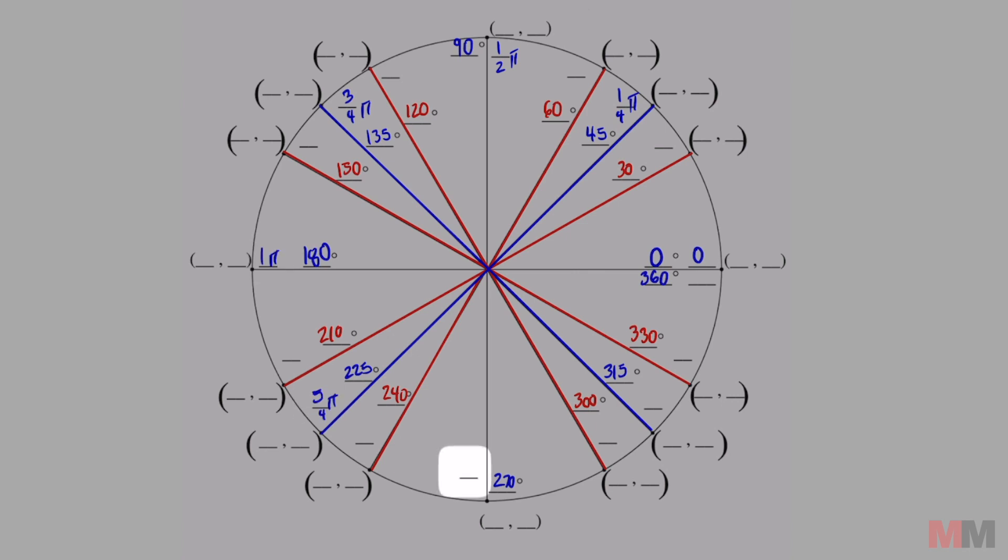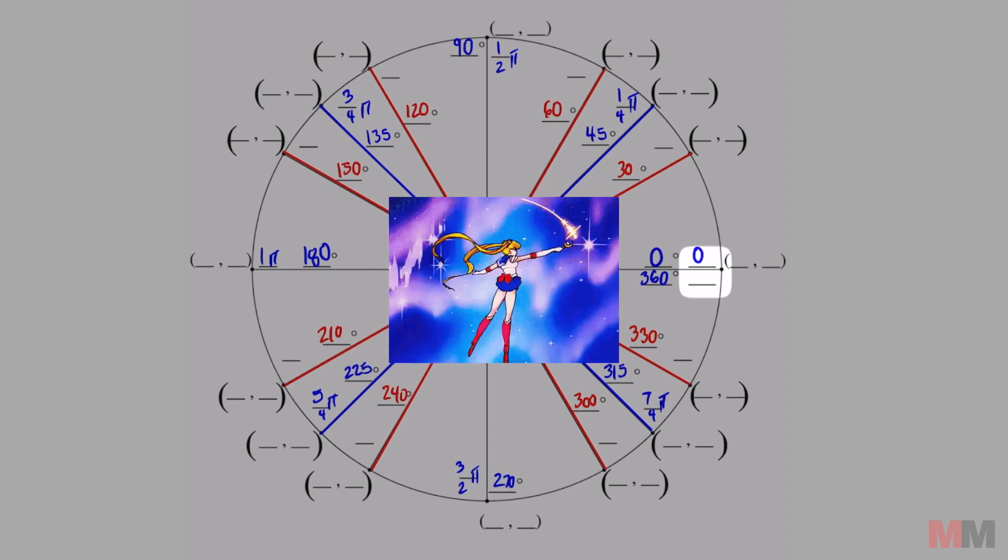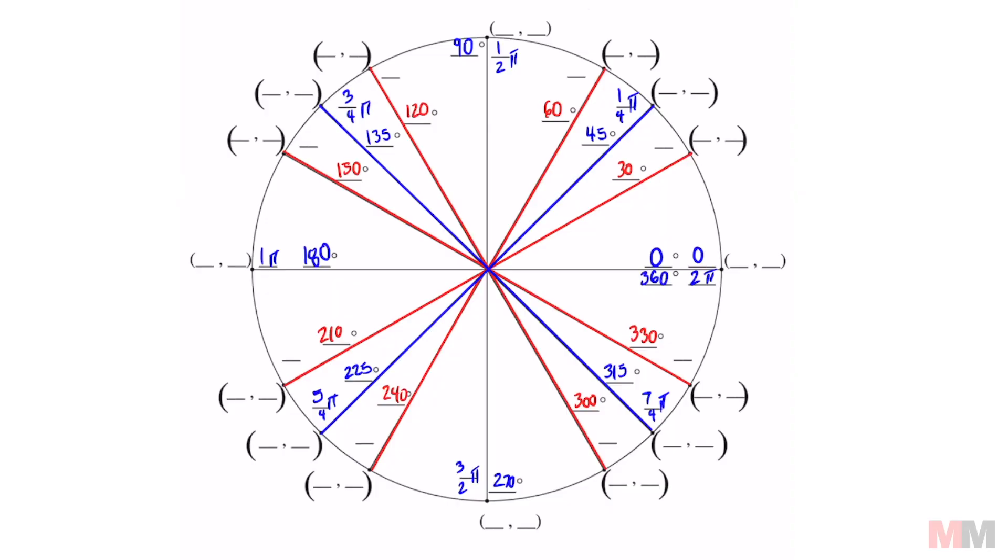Five over four. Six over four simplifies to three halves. Seven over four. And eight over four as a full circle. Eight divided by four is two pi. And we got one left.